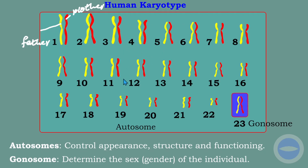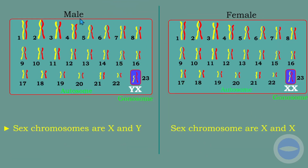Every organism has a different karyotype with a different number of chromosomes, and the sizes are not equal. In a male karyotype, the sex chromosomes consist of an X chromosome and a Y chromosome.